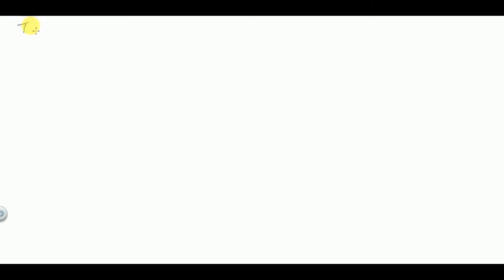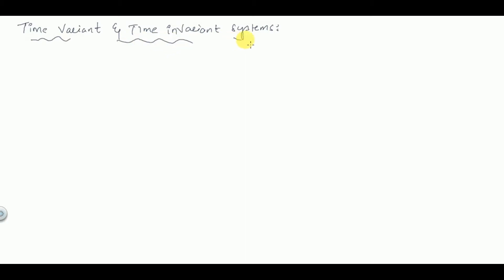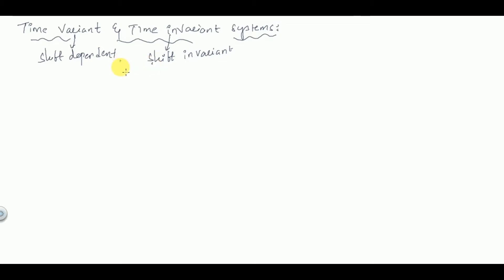Hello everyone, welcome back to my channel. In this video we are going to learn about time variant and time invariant systems. Time variant systems are also called shift dependent systems, and time invariant systems are called shift invariant systems — where 'shift' here means time shift.